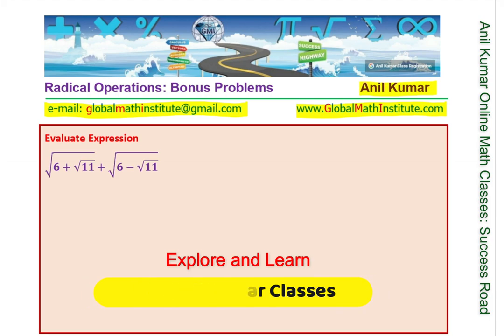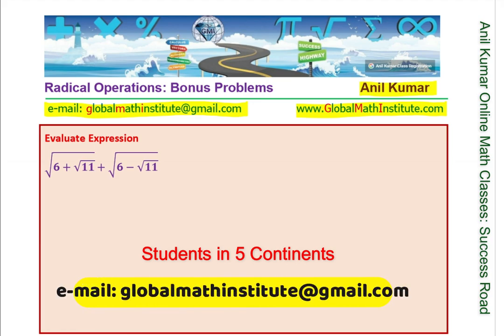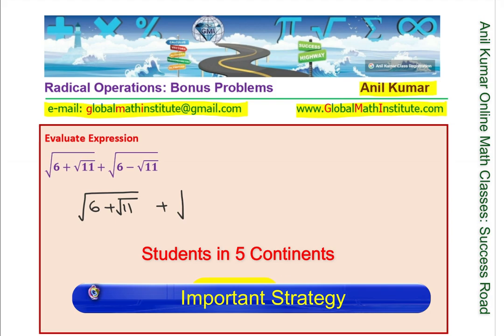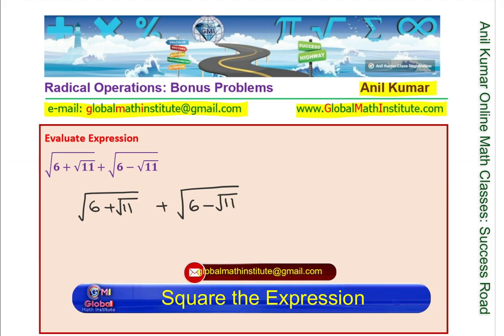You can also join our free math group. Now let us see how we evaluate the given expression: square root of 6 plus square root of 11. One observation is that we are adding its kind of conjugate. Evaluate means it is going to give us one value, so let this value be x.